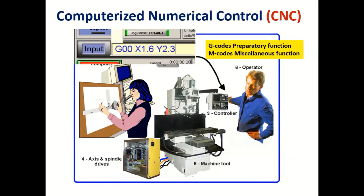Various functions performed through G code include spindle rotating clockwise or anti-clockwise, giving the feed rate, and table movement along the XY plane or YZ plane. A number of commands are given in the G code to the machine control unit, through which the machine will operate. In the M code — miscellaneous functions — various functions are done: spindle start, stop, program start, program end, program stop, tool change, etc.